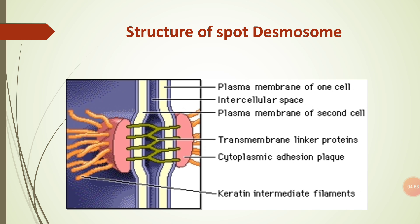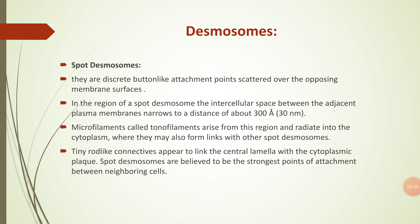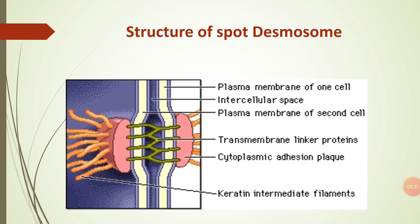The tonofilaments may also form links with other spot desmosomes. Tiny rod-like connectives appear to link the central lamella with the cytoplasmic plug. Spot desmosomes are believed to be the strongest points of attachment between neighboring cells. Under the electron microscope, these appear as button-like thickenings on the inner surface of the plasma membrane of adjacent cells at the point of contact. These thickenings are traversed by fine cytoplasmic fibers called tonofibrils.